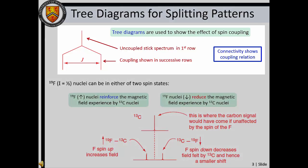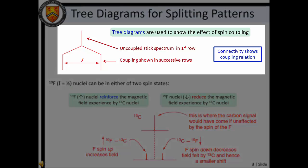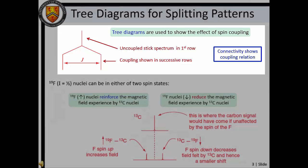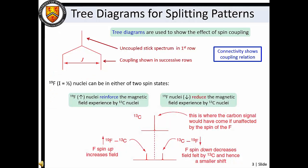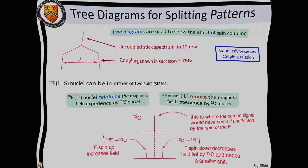NMR splitting patterns can be represented with tree diagrams. The top row of a tree diagram represents the resonant frequency in the absence of spin coupling. Coupling with each interacting nucleus is then shown in subsequent rows of the diagram. In the case of our spin one-half fluorine coupling, one vertical line is drawn to the left of the original uncoupled line, thus representing the high frequency shift. A second vertical line is then drawn to the right to represent the low frequency shift due to spin coupling. The diagram connectivity shows the coupling relation.